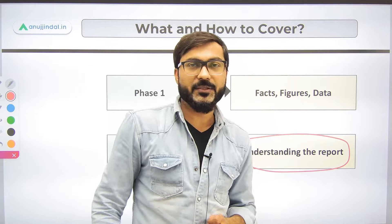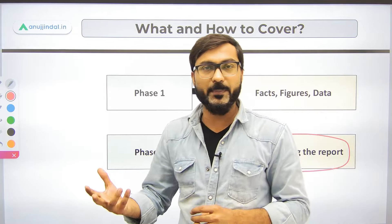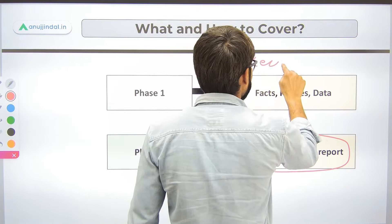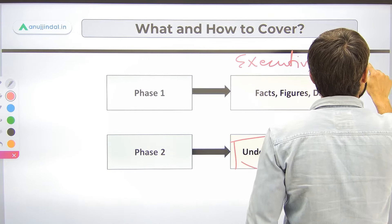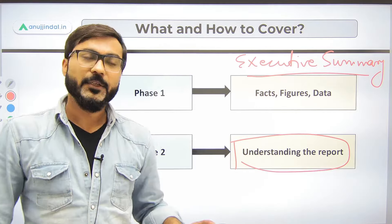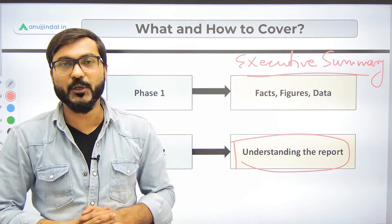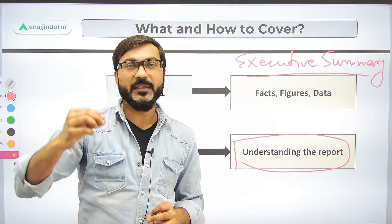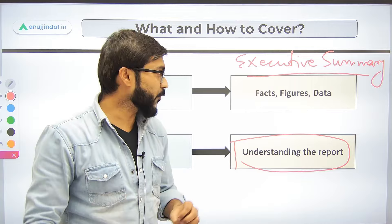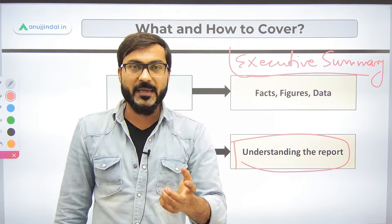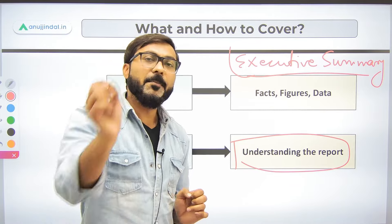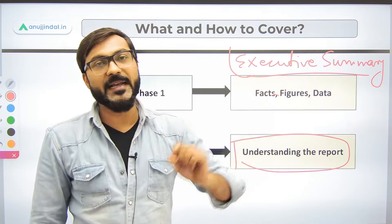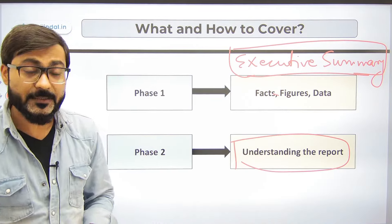You might wonder how to understand a report when every organization releases very bulky reports of 150 to 200 pages. Should you go through the entire report? Absolutely not. In every report they provide an executive summary. Go through the executive summary — and you can also use AI to summarize it further. That is point number one. Point number two: use Ctrl+F to find the word 'India.'